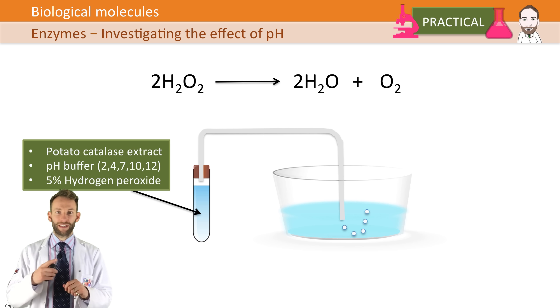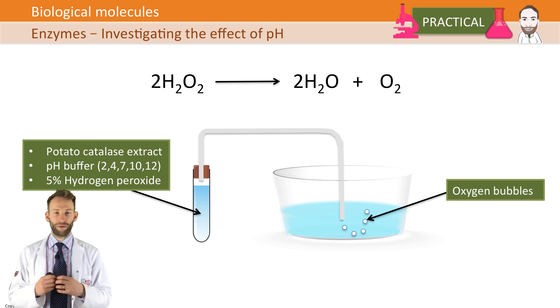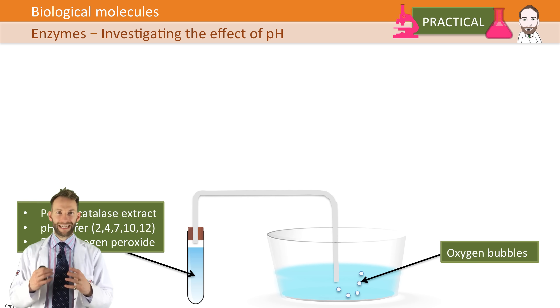Then you just count the number of bubbles that come off in a minute, and that gives you an indication of the rate of reaction. Do the same thing again but change the pH - use a different pH buffer. Remember again to make sure that the control variables are kept the same to make it a valid experiment and to collect accurate results.